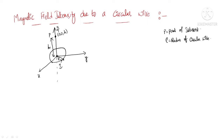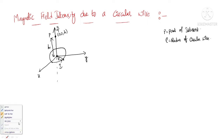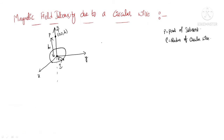Now, how can I find the field intensity? According to Biot-Savart's law, the expression for field intensity is dH bar = I dL bar cross r bar divided by 4 pi r cube. This is the differential field intensity due to the small circular element.